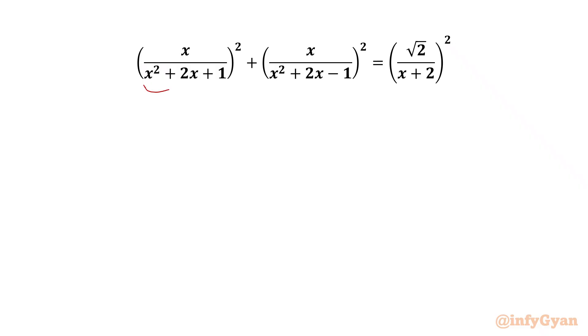I will begin with writing our denominators cannot be 0. So x squared plus 2x plus 1 cannot be 0, which is (x+1)². So I can write x cannot be equal to negative 1.